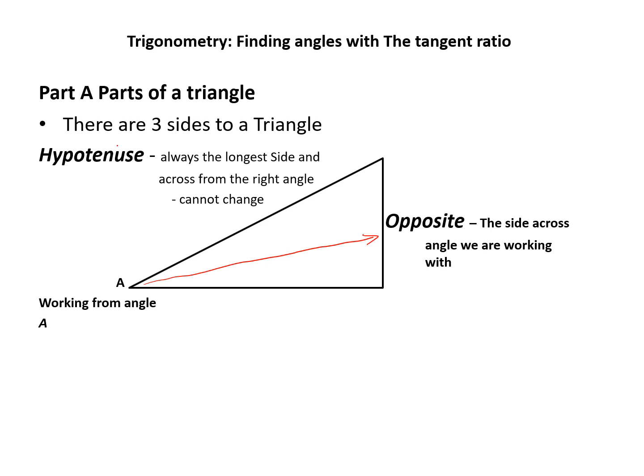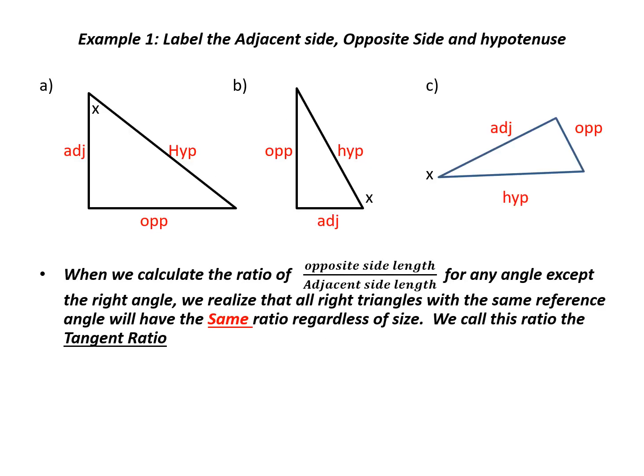The next side is the opposite side, which is always across from the angle we're looking at. The final side is adjacent. Stop your recording now and try the next slide and see if you can do the three triangles. Here is what you should have gotten with x being the angle that we are looking from.